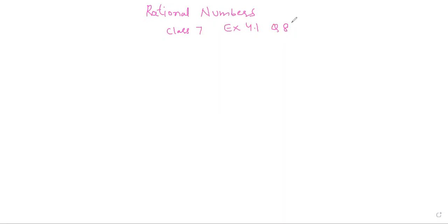If you guys want to see the solution of earlier chapters of Class 7, the chapter names are integers, fractions, decimals, linear equations, and earlier questions of rational numbers — you can go to the playlist where all the links are available. Moreover, I have solved many chapters of Class 8 of the same publication house, that is Goyal Brothers. The chapter names are rational numbers, exponents, square and square roots, cube and cube roots, algebraic expressions, factorization of algebraic expressions, playing with numbers, linear equations in one variable, quadrilaterals, probability, percentage and its applications, surface area and volume. So all the links you can find through the playlist of the channel.